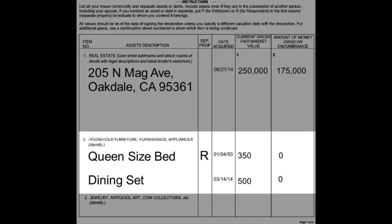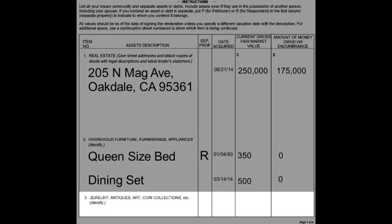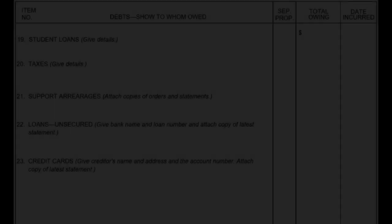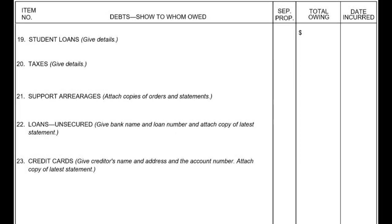Item 2, household furniture, furnishings, and appliances: if the respondent owned a queen-size bed before the marriage and it will be contended as their property, an R will be put in the separate property column. Item 3, jewelry, antiques, art, coin collections, etc.: list whose property it was, the initial date acquired, and the current gross fair market value. If item 4, vehicles, boats, and trailers, does not apply, write 'none' in the asset description and leave the rest of the categories blank — you do not need to write N/A or zero in the other columns.